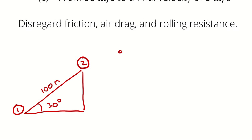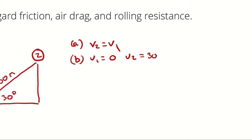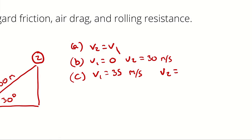In situation A, V2 is equal to V1. In situation B, V1 is 0 and V2 is 30 meters per second. And in situation C, V1 is 35 meters per second and V2 is 5 meters per second.